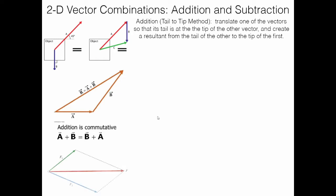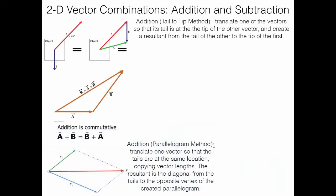There's another way to add two vectors called the parallelogram method. Translate one vector so both vectors share the same tail, going in their respective directions. Then copy the lengths of each vector at the tip of the other, creating a parallelogram. The diagonal from the shared starting point to the opposite vertex of the parallelogram is your resultant.